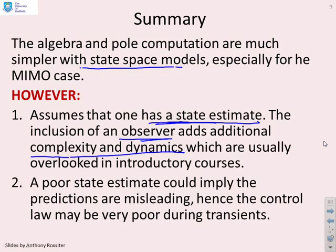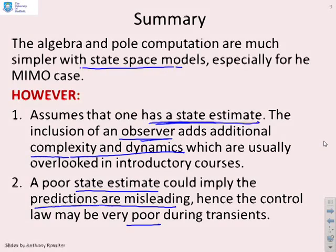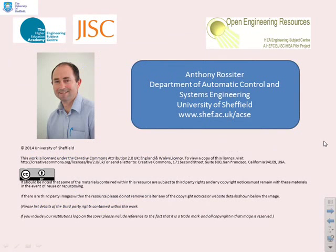And here's the problem. A poor state estimate will imply that your predictions are misleading, and hence your control law could also be misleading and very poor during transients. And indeed, you will see that if you set up a simulation where it's necessary to include the observer explicitly, and you start with a poor estimate of the initial state, then during the initial transients, your control can be quite poor.